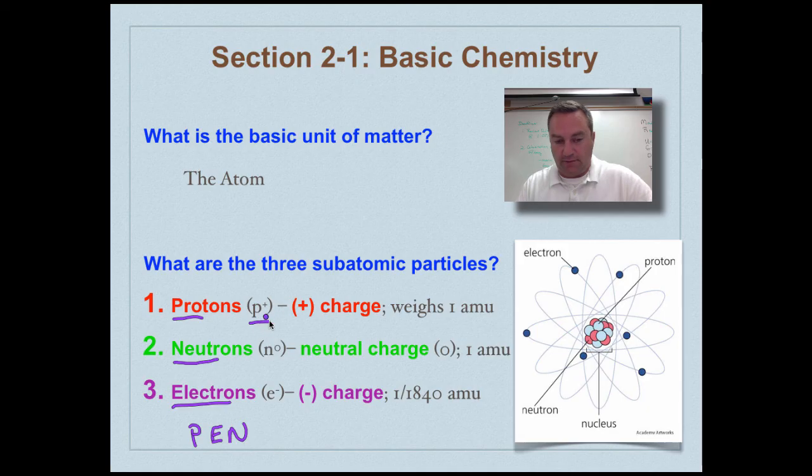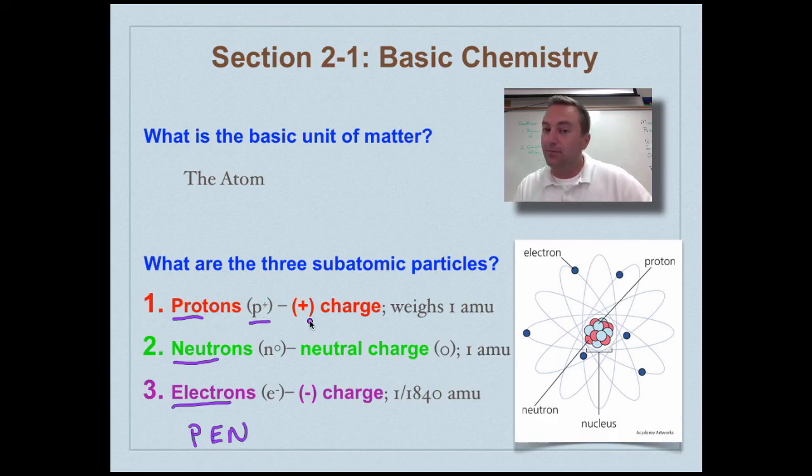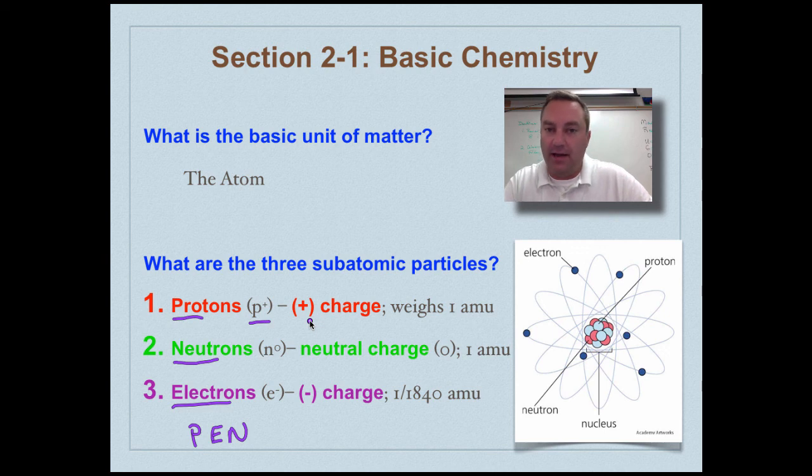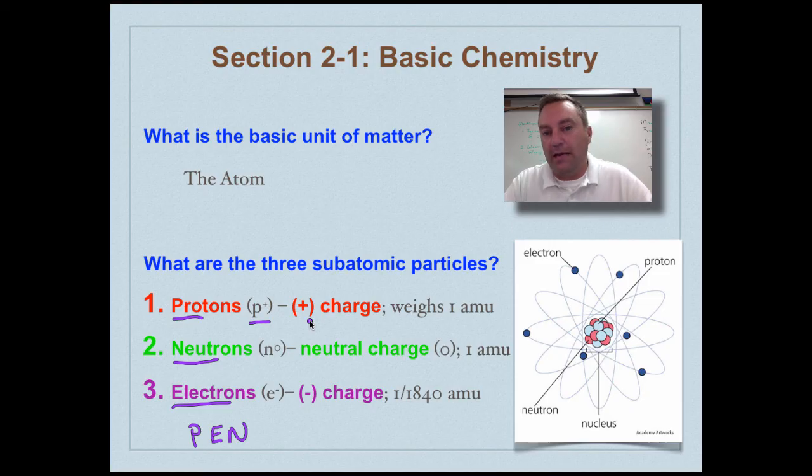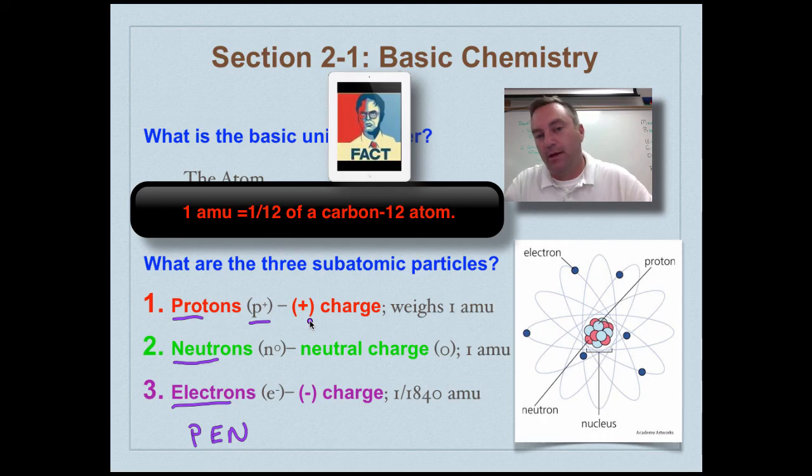Protons - we're going to use the symbol p+ positive because p is for proton and the positive refers to its charge. It has a positive electrical charge. Now these guys are going to weigh one atomic mass unit. These subatomic particles weigh way less than a gram and that's really too small of a number for us to comprehend. So we created a new metric unit called an atomic mass unit, AMU for short, and protons weigh one of those.